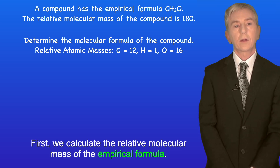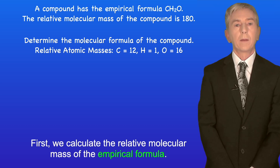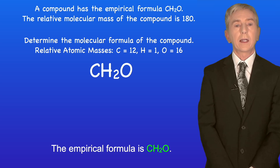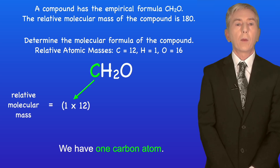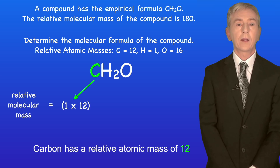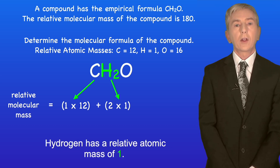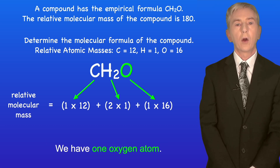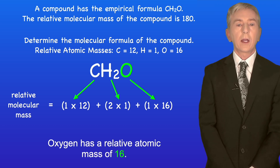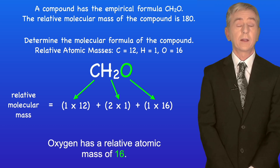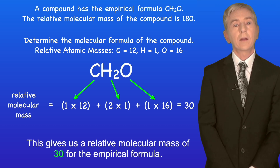First we calculate the relative molecular mass of the empirical formula. The empirical formula is CH2O. We have one carbon atom and carbon has a relative atomic mass of 12. We have two hydrogen atoms and hydrogen has a relative atomic mass of 1. And we have one oxygen atom and oxygen has a relative atomic mass of 16. This gives us a relative molecular mass of 30 for the empirical formula.